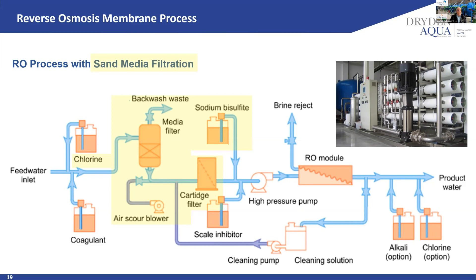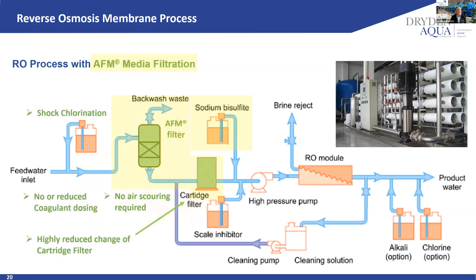Cartridge filters are always a big question — they foul more frequently, requiring exchange. Then you have sodium bisulfite dosing to neutralize free chlorine. If you use AFM media filtration with shock chlorination, we don't need any coagulant or flocculant dosing, we dramatically improve cartridge filter lifetime, and we don't need any air scouring. In sand filters, air scouring is required to scrub off the biofilm attached to the media surface — which is not the case with AFM. A normal backwash can easily wash out all the collected particles.